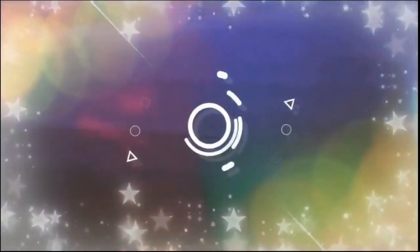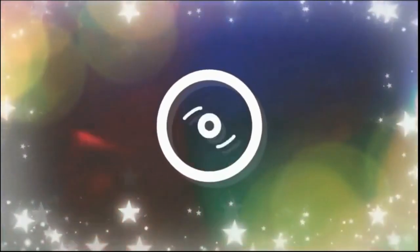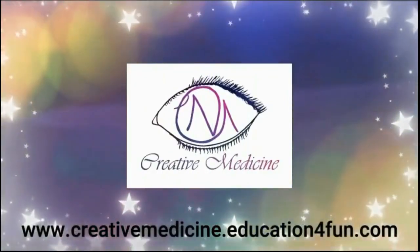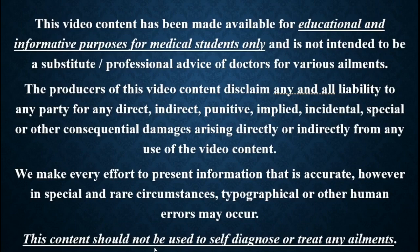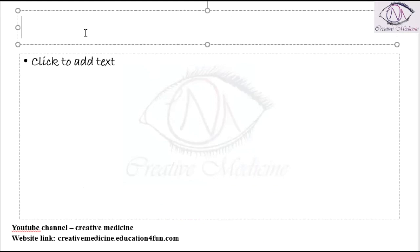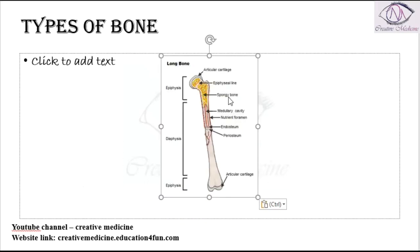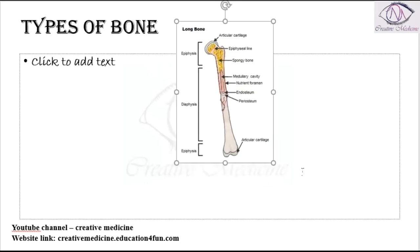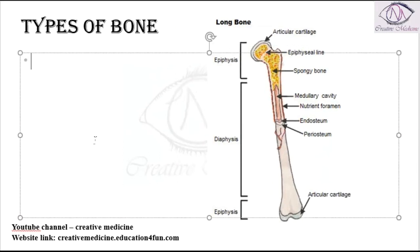Hello friends, welcome to Creative Medicine. In this lecture we will learn about the types of bone. In bone there can be either cortical bone or cancellous bone.